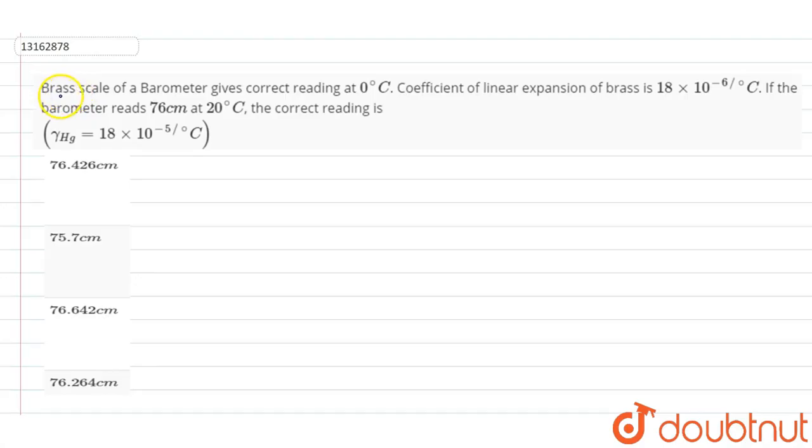The question is that we have a brass scale of a barometer which gives correct reading at 0 degree Celsius. The coefficient of linear expansion of brass has been given to us as 18 times 10 to the power minus 6 per degree Celsius. If the barometer reading shows 76 cm at 20 degree Celsius, then we will find out the correct reading.